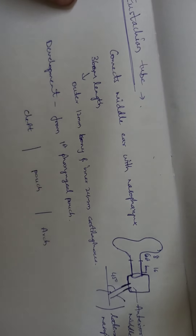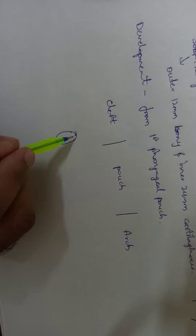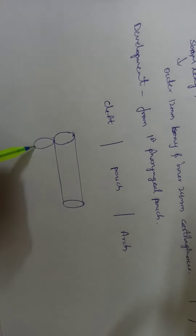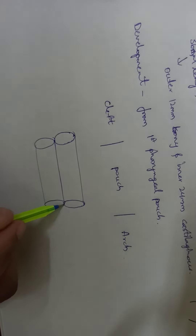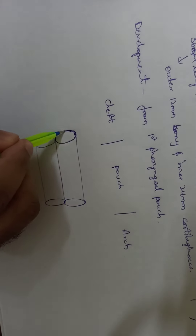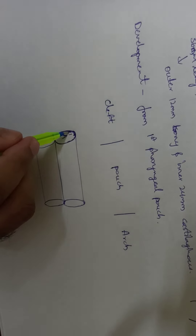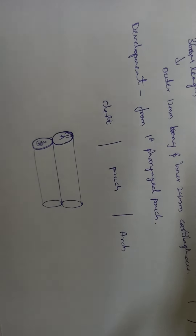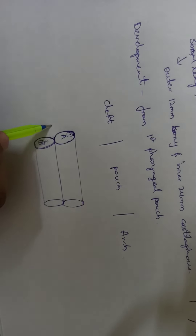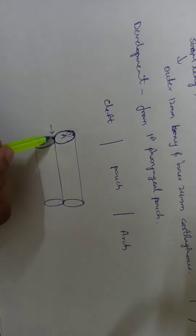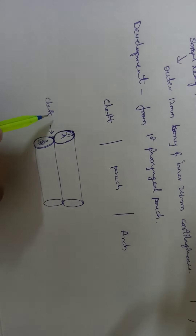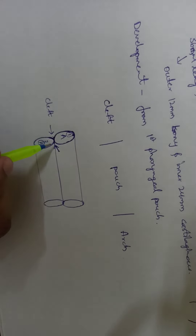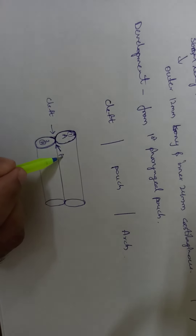If you take your pharyngeal arches — one side pharyngeal arch and another side pharyngeal arch — this is the first pharyngeal arch and this is the second pharyngeal arch. In between these two, the outer depression is called the cleft, and the inside depression forming between the two arches is called the pouch.